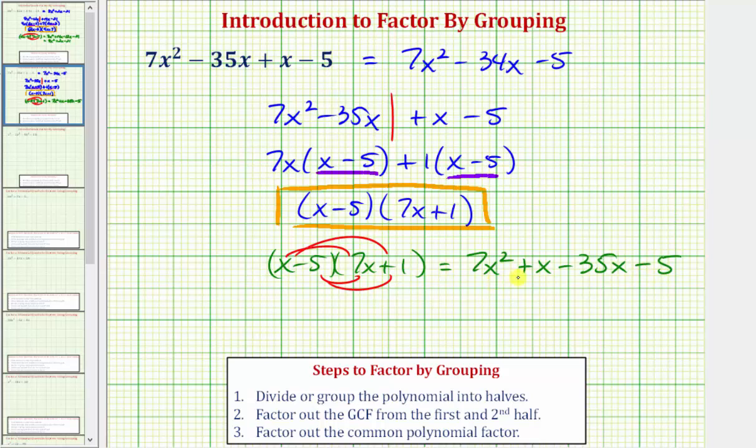So notice how this expression is equivalent to the given expression, even though the two middle terms are in a different order. Of course, we could go one more step further and combine these like terms. x minus 35x is negative 34x, or minus 34x. And notice how this simplified expression is the same expression that we have up here in simplified form.